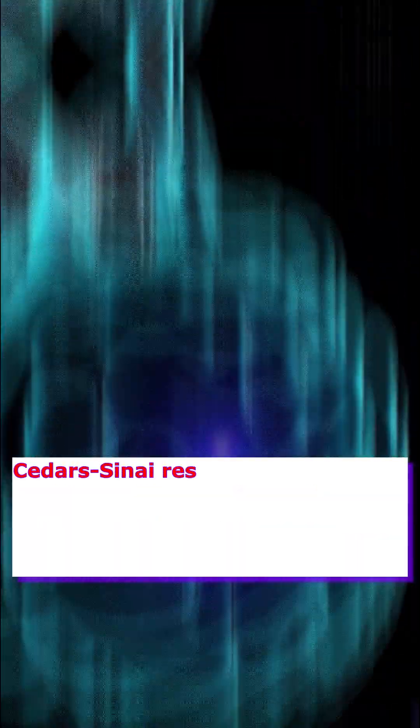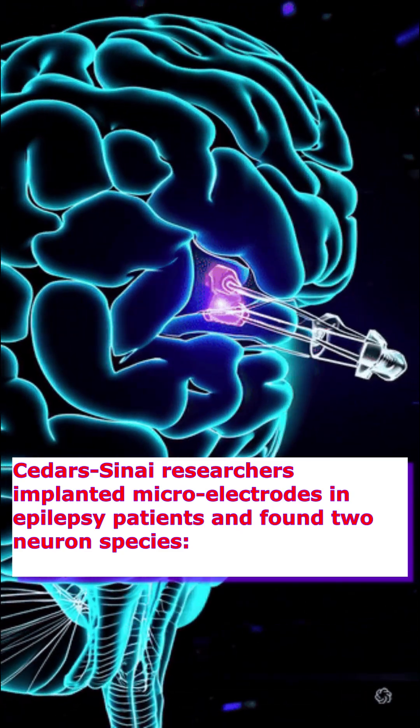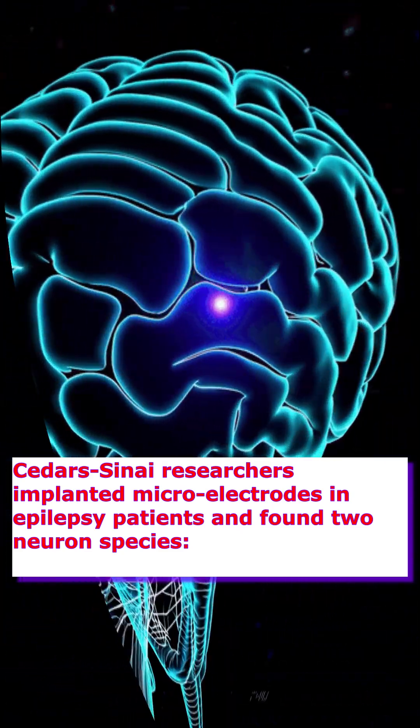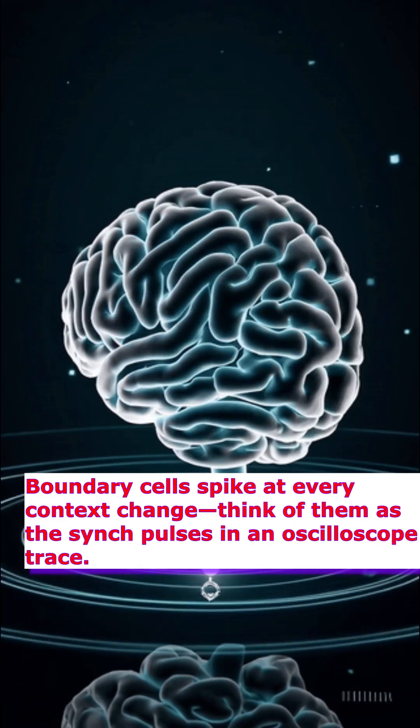Cedars-Sinai researchers implanted micro-electrodes in epilepsy patients and found two neuron species. Boundary cells spike at every context change.